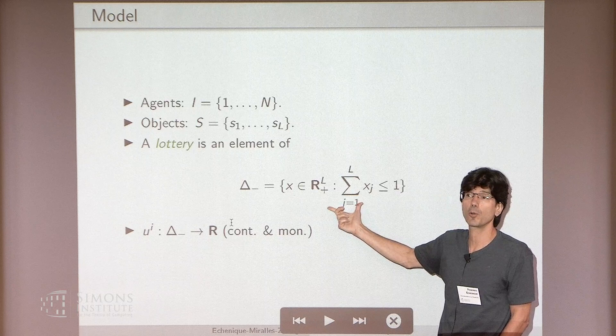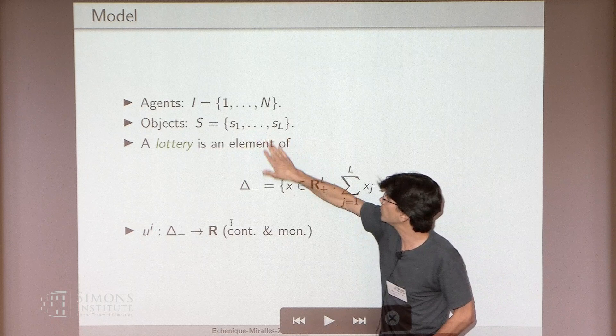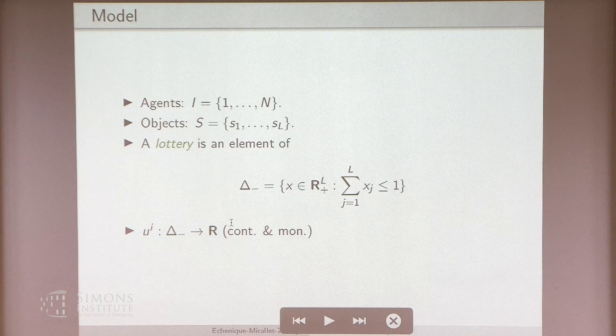Each agent will have a utility function, which I assume throughout to be continuous and monotone, that assigns a utility number to each lottery. The implicit assumption in monotonicity is that the outside option is the worst thing — when I say monotonicity, you want one of these goods. Which one you want depends, but you like these goods more than the outside option. That's the model.